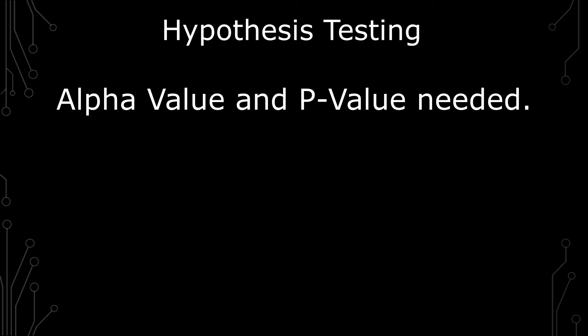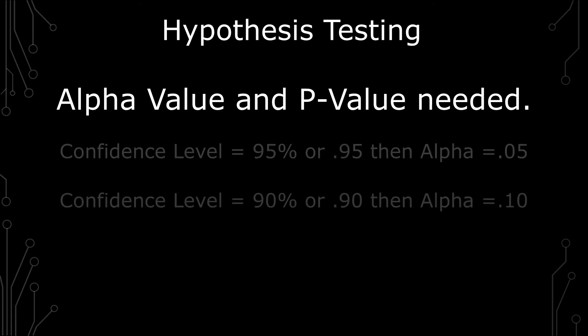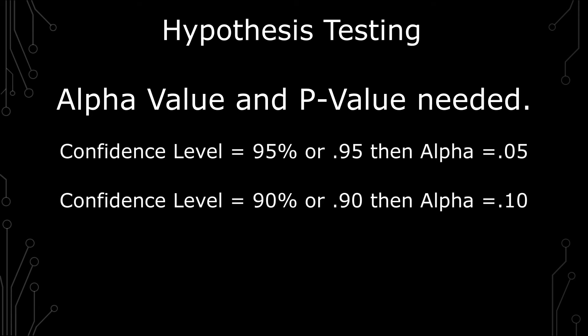if it's t, z, chi-square, they're all going to be giving you different p-values at the end of the day. A quick refresher for alpha values. If you have a 95% confidence for your test, your alpha value is 0.05. If your confidence is 0.9, your alpha will be 0.1.